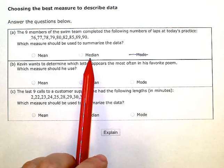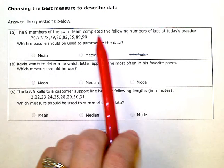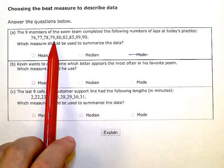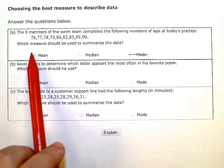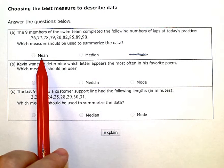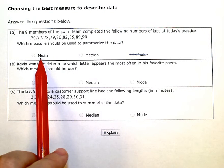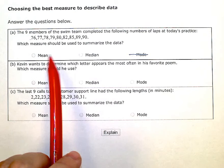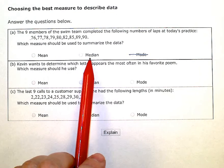If there's outliers, like a number way higher or way lower than the rest of the data points, that can skew or kind of pull the average in one direction or the other. And that one number could affect how the average comes out.